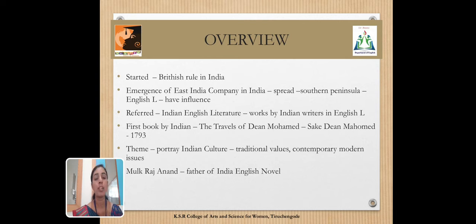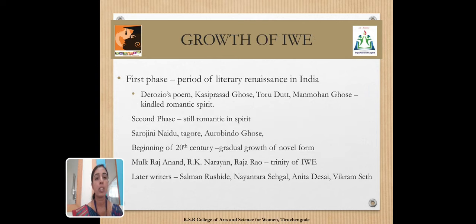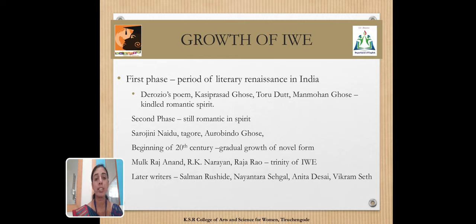The father of the English novel is Mulk Raj Anand. The growth of Indian Writing is based on two phases: the first phase is the period of literary renaissance, and the second phase kindled the romantic spirit, following the first phase. The gradual growth of the novel form began in the 20th century. We consider Mulk Raj Anand, R.K. Narayan, and Raja Rao as the trinity of Indian Writing in English.